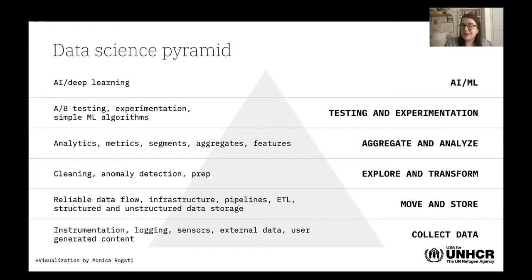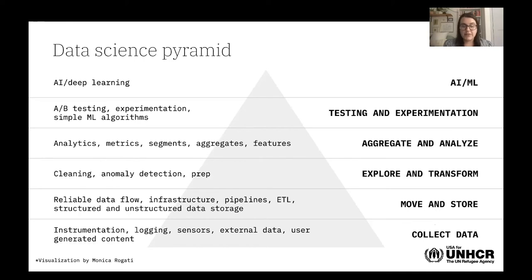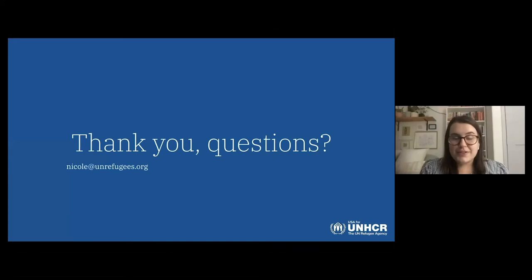I'll close with the data science pyramid. This is really the core of our model — something we continue to do. I presented a chronological journey, but we're constantly going back down: we'll move up to testing and experimentation, then reassess what other data we could use and how we can better supplement what we have to improve outcomes for refugees. It's important to keep asking not only how we can serve refugees with the data we have, but in an ideal world, what data would we need? Thank you for coming tonight, and I'm happy to answer any questions about my role, the organization, or the refugee crisis.